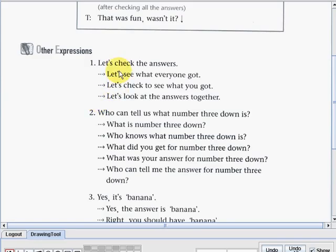Okay. So check, see, then another check and look. So they mean the same thing. Okay, so that's what the teacher is trying to say in this first expression. Now let us go to number two, which is a question. And the question goes, Who can tell us what number three down is?